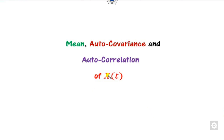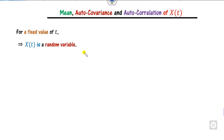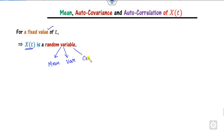Once you define the random process x(t), how can you find the mean, autocovariance, and autocorrelation? First of all, if you have a fixed value of t, then x(t) is a random variable. Once it is a random variable, you can define the mean, variance, correlation, covariance, and many more things.